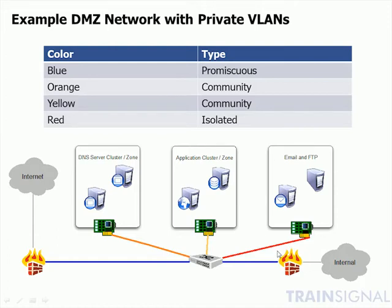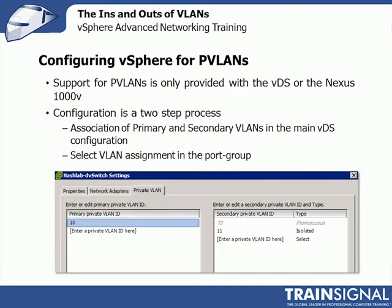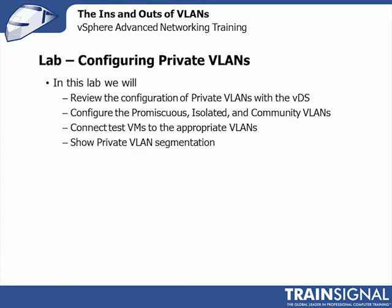Configuring private VLANs is pretty simple — you have to have the vSphere distributed switch or the Nexus 1000V. It's a two-step process: first, associate primary and secondary VLANs in the main switch configuration; then, on each port group, tell it which VLAN to use. So you'll create them — the primary is say 10, which is automatically promiscuous. Then set 11 for isolated. To attach VMs to the isolated or promiscuous, go to each port group, select private VLAN from the VLAN drop-down, and pick 10 or 11. So let's go see this live in the lab.